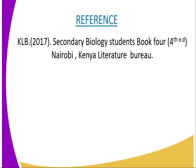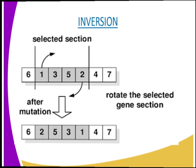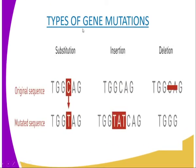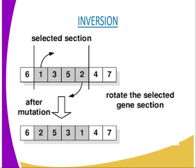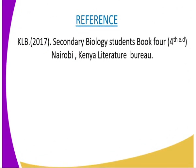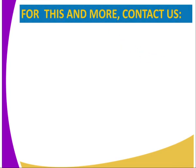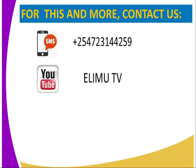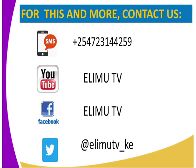Having done that, those are the four types of gene mutation: substitution, insertion, deletion, and inversion. As an activity, you are required to identify the four types of gene mutation. For more on this lesson, you can refer to the KLB Secondary Biology Students Book 4, fourth edition, Kenya Literature Bureau. For this and many more biology lessons, you can send us an SMS, subscribe to our YouTube or Facebook page at Elimutv, or tweet us at Elimutv underscore Kenya.